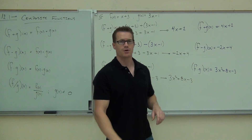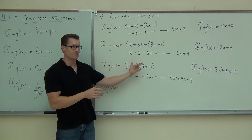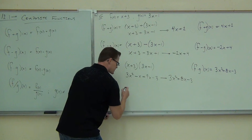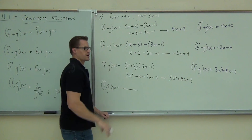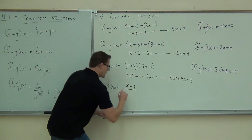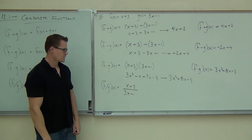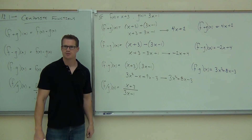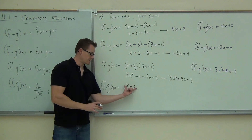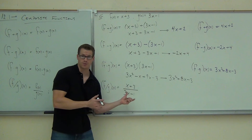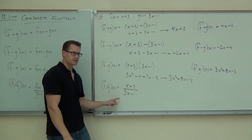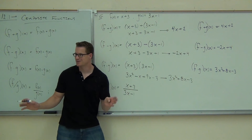The last one is f over g of x. f over g of x says you're just going to take f of x and put it on top of g of x. What goes on the numerator? f of x — and yes, it really is important to put that one on the numerator. So we have x plus 3 over 3x minus 1. Can I cross out the x's or the 3's? No — they're all connected by addition and subtraction. Unless you can factor these, which you can't, you're essentially done. This is the expression — it's a rational function.